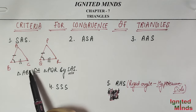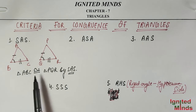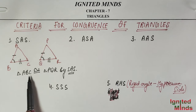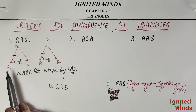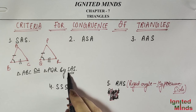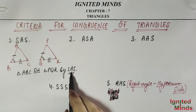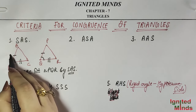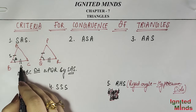Now, what is the meaning of SAS? Look at it. We have Triangle ABC. AB is equal to PQ, and BC is equal to QR. The angle between the two sides — that is angle B — is equal to the corresponding angle. So S, A, S: two sides and the included angle are equal. This is the SAS criteria.